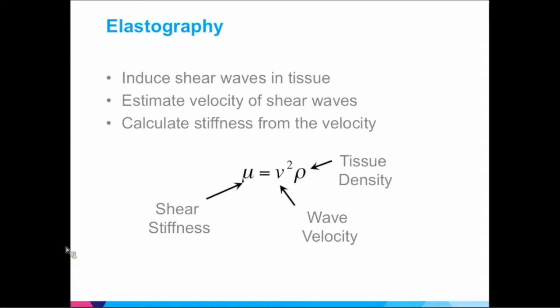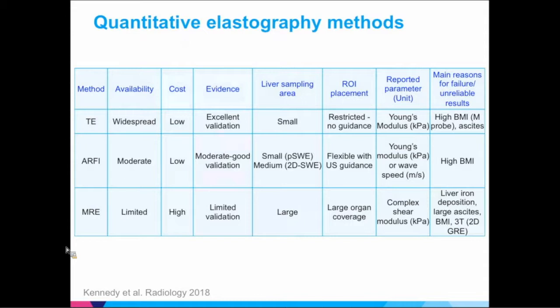There are also qualitative elastography methods that are extremely dependent on how much pressure you put on the probe — mostly ultrasound methods used in breast and thyroid. The three main quantitative methods are TE, ARFI, and MRE. TE has widespread use, it's cheap, and has been very well validated. The studying area is small — still bigger than a biopsy — and ROI placement is restricted with no guidance. Young's modulus is measured here in kilopascals.